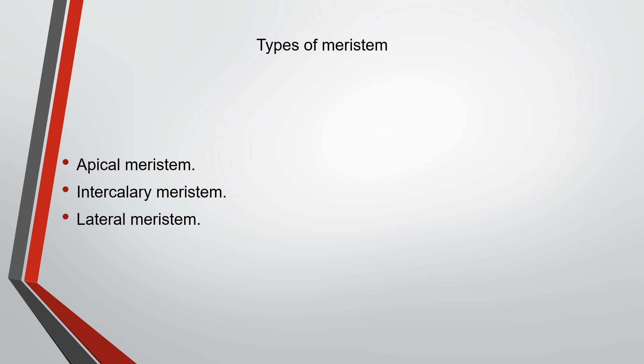Now there are three types of meristem: the first is apical meristem, the second is intercalary meristem, and the third is lateral meristem. We will now discuss each of these three types.